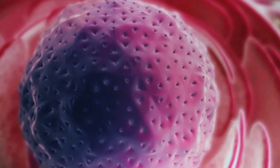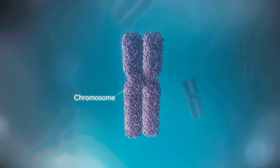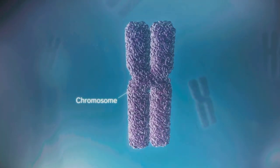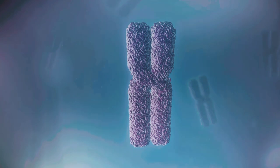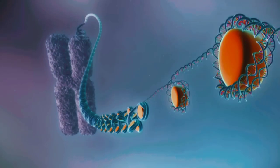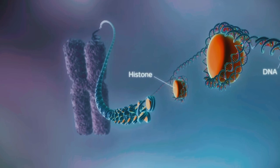In humans, the genome is split between 23 pairs of chromosomes. Each chromosome contains a long strand of DNA, tightly packaged around proteins called histones.